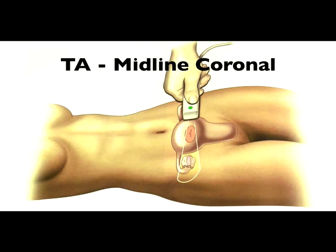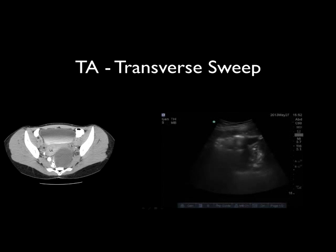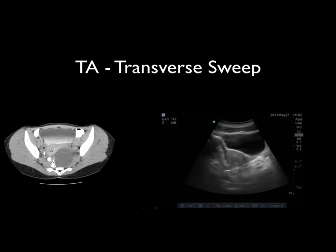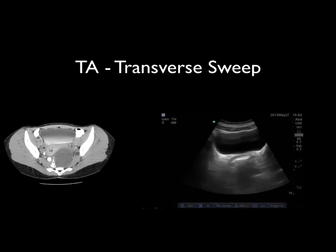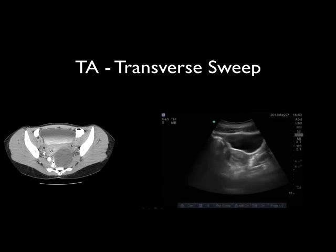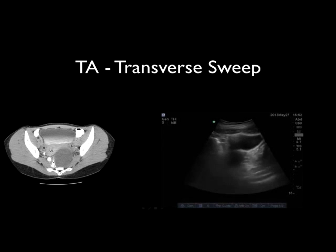Next, when doing our transabdominal scan we're going to do a midline or coronal image of the uterus. We're going to have the probe marker to the patient's right side and again the probe just superior to the pubic symphysis. On the right side we see an ultrasound image and on the left side we see a corresponding CT image. On our ultrasound image we start by visualizing the bladder, which is the anterior aspect of the patient. The probe marker corresponds to the patient's right side. Just posterior to the bladder is the uterus. You can identify the difference between the vaginal canal and the uterus: the vaginal canal has an oval appearance while the uterus has a more circular appearance.